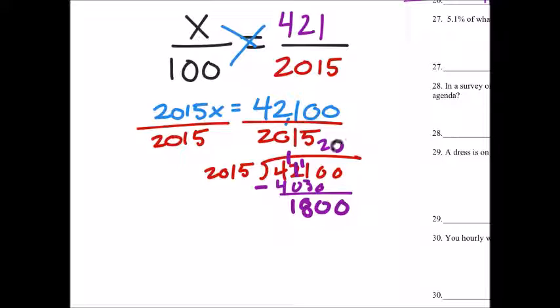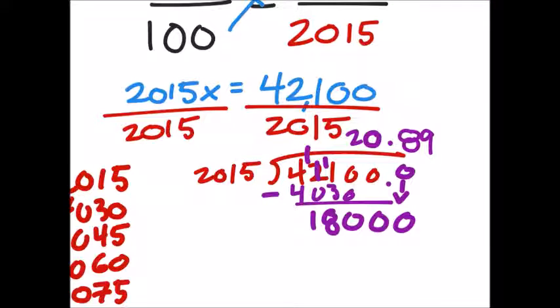1800. It won't go into 1800 but it will go into this really large number. 18,000. Let's look at some multiples. 20.89. We were on the right track.